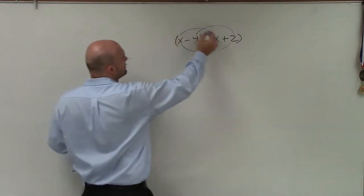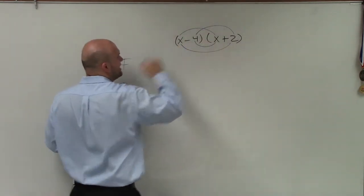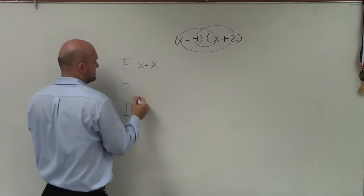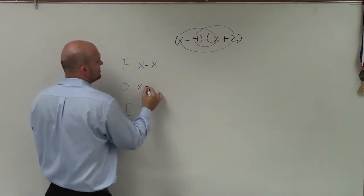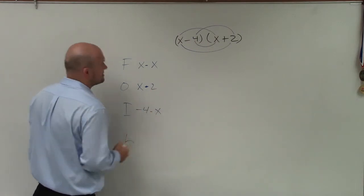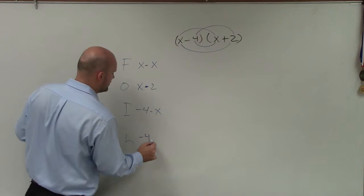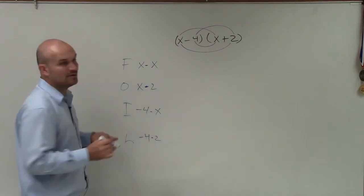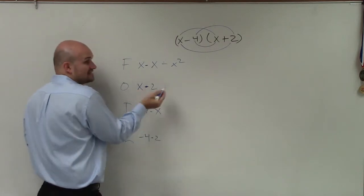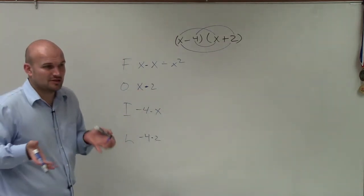So what I want to do is the two terms that I've connected, I want to multiply them. So the first is going to be x times x. The outer is going to be x times 2. The inner is negative 4 times x. And the last is negative 4 times 2.